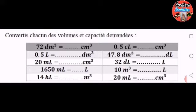14 hectolitres égale combien de mètres cubes ? 0,5 centilitres égale combien de centimètres cubes ? 47,8 décimètres cubes égale combien de décilitres ? 32 millilitres égale combien de litres ? 10 mètres cubes égale combien de litres ? 20 millilitres égale combien de centimètres cubes ?